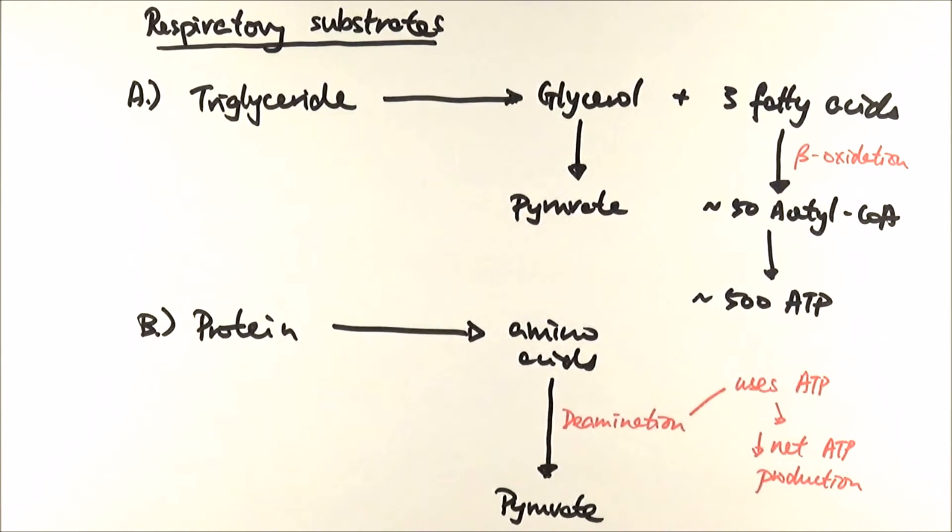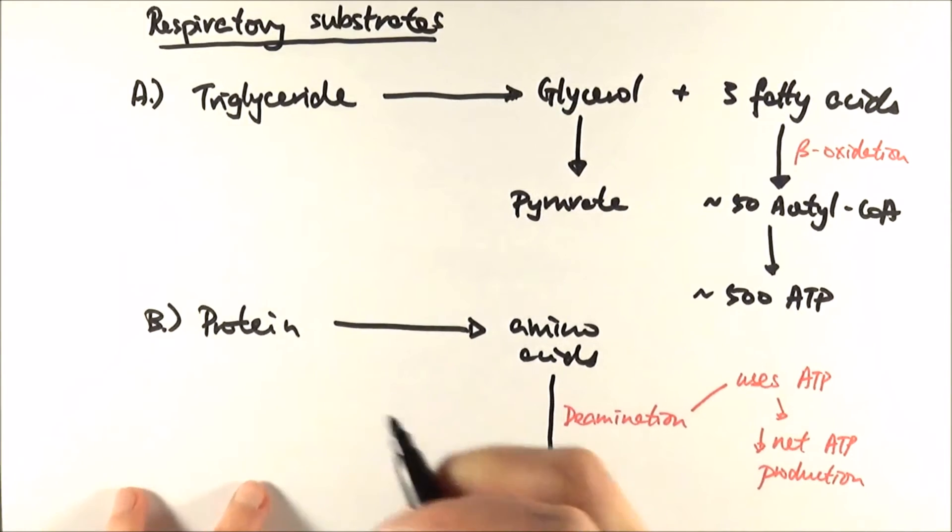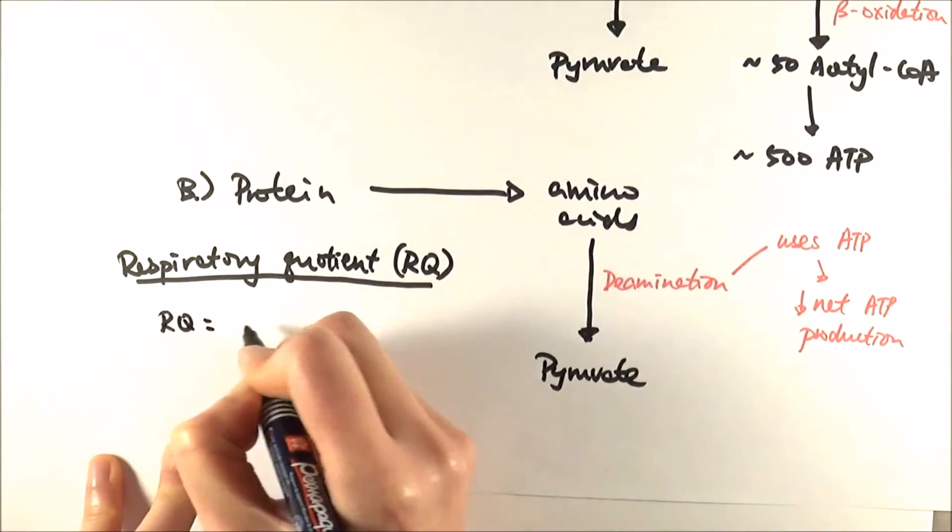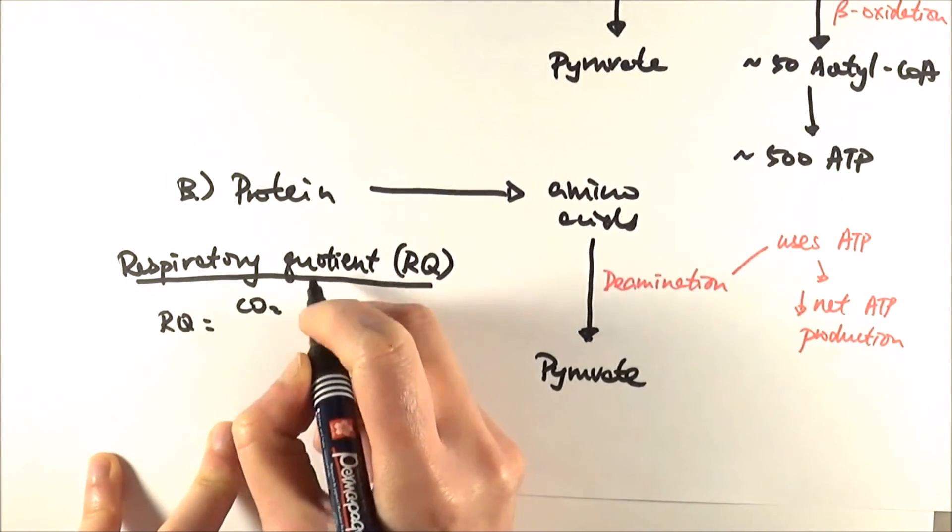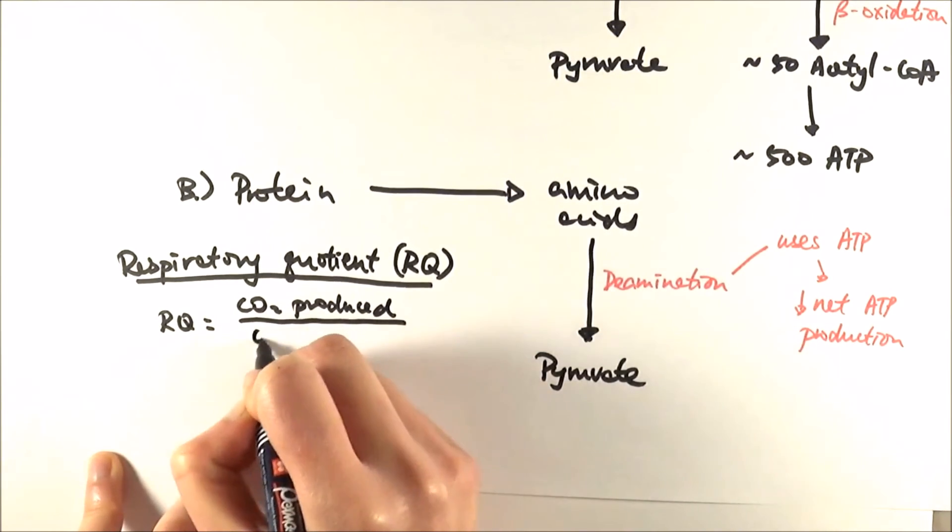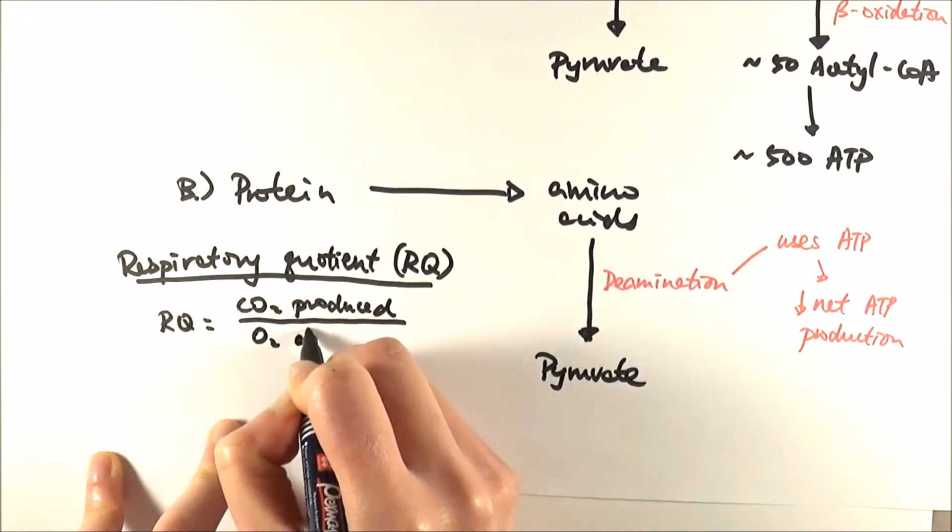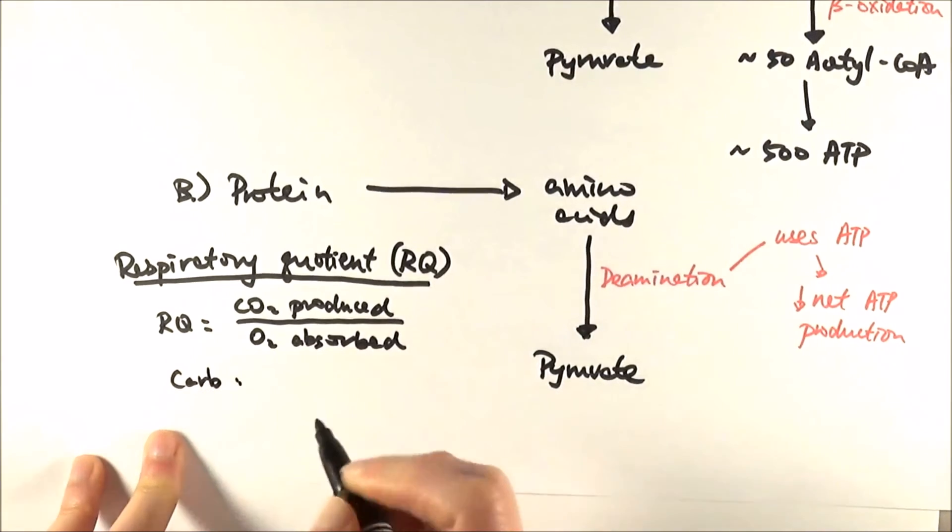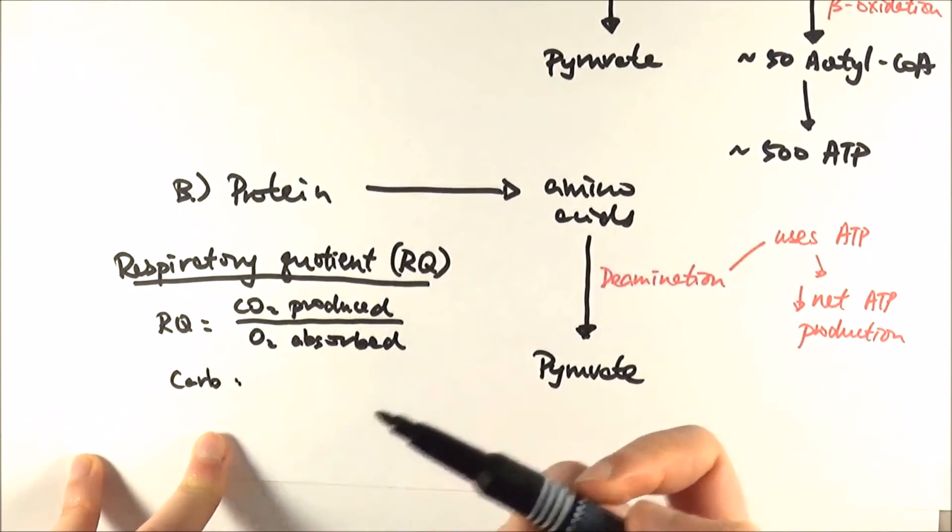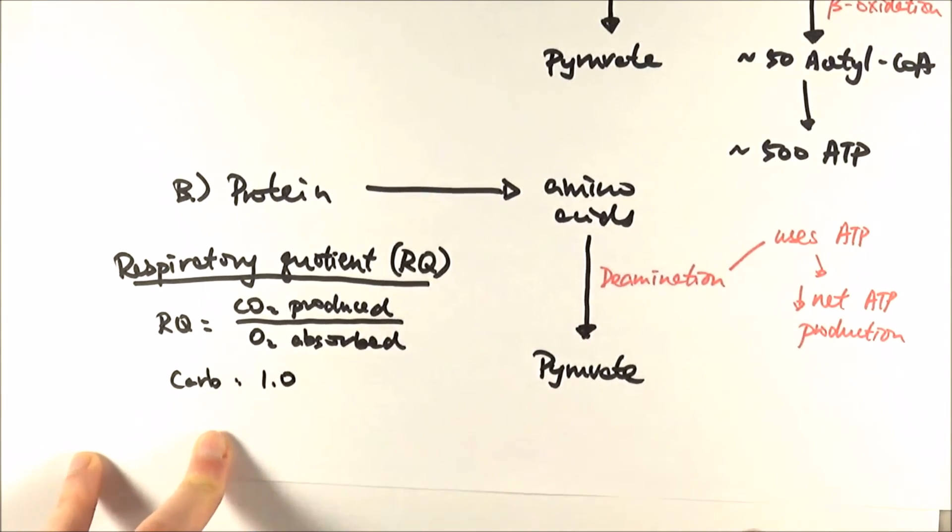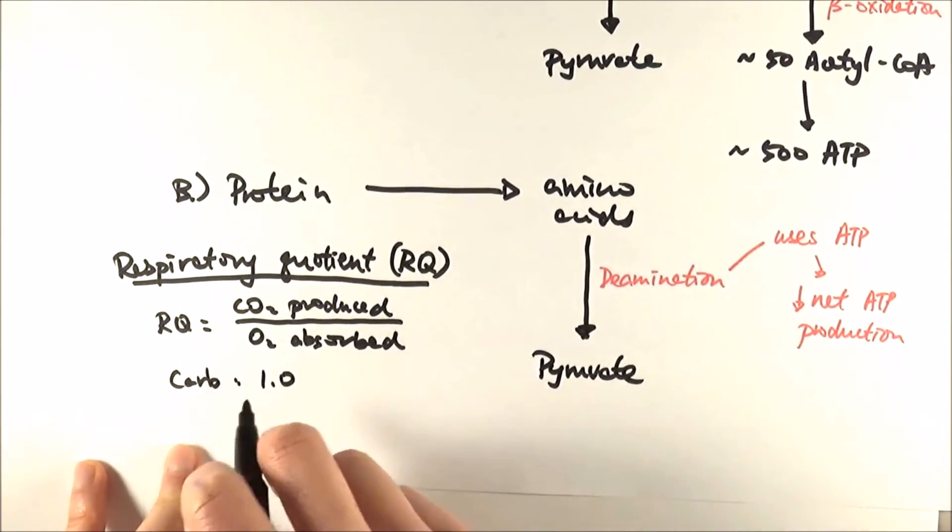In exams they often like to ask about the respiratory quotient. The RQ value is quite important—you need to make sure you know how to calculate it. It's very simple: it's the number of carbon dioxide molecules produced divided by the number of oxygen molecules absorbed or consumed. For carbohydrate or glucose, we make six carbon dioxide from and using up six oxygen, therefore our respiratory quotient is just one. Very easy maths.